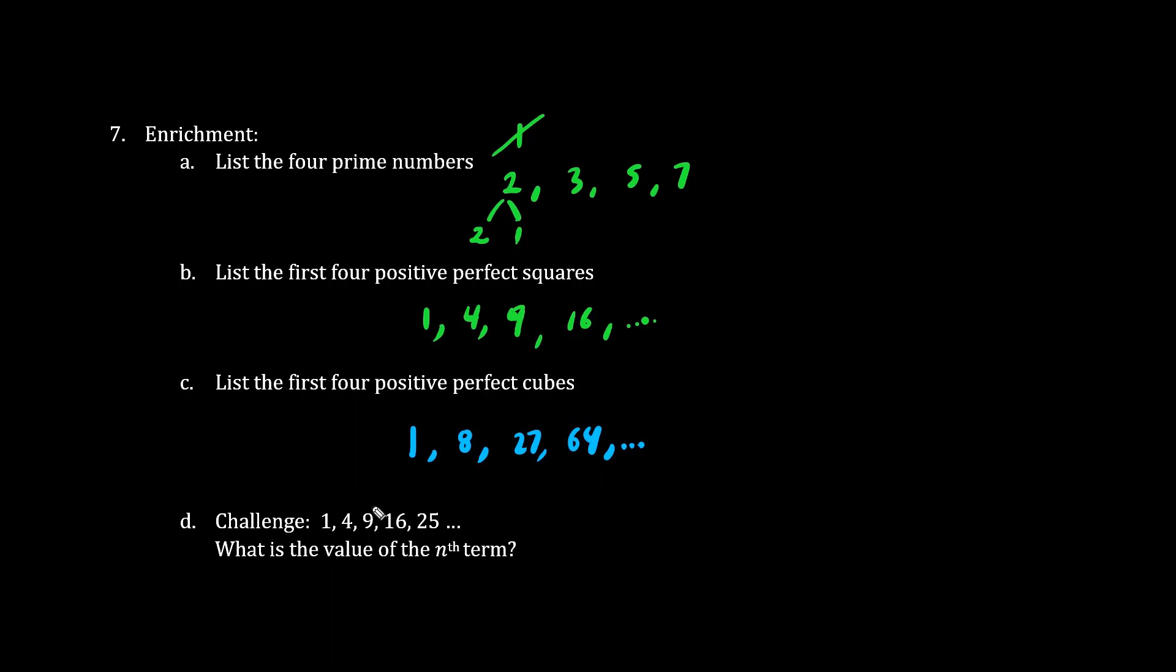So looking at this list of numbers here, we have 1, 4, 9, 16, 25. The first number is 1. The second number is 4. The third number is 9. The fourth is 16, etc. What is the value of the nth term? So when we have n, we have the value n squared as our answer.